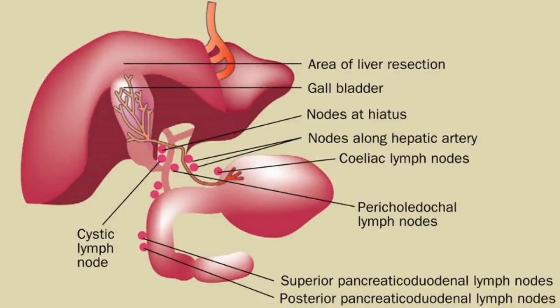Difference between cholecystitis and cholelithiasis. Bile is a substance produced by the liver and stored in the gallbladder. It emulsifies the fat globules in the food we eat and enhances their water solubility and their absorption into the bloodstream.